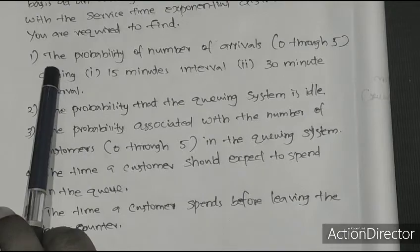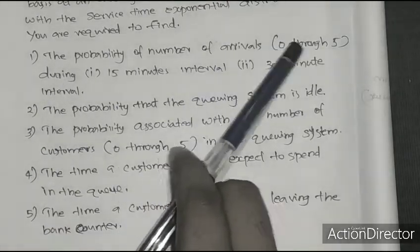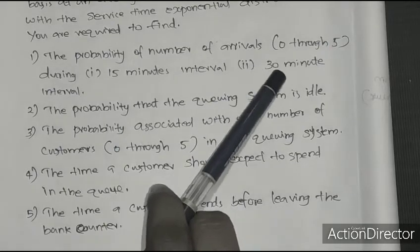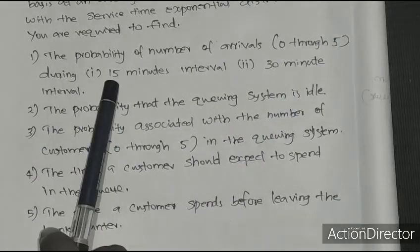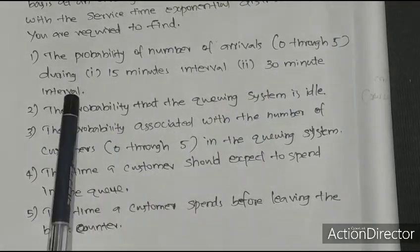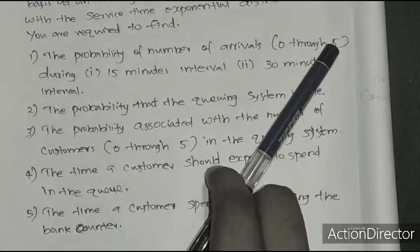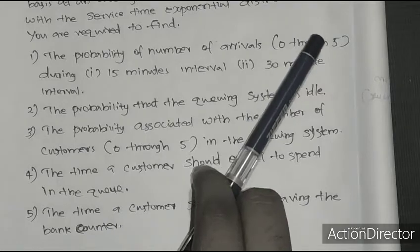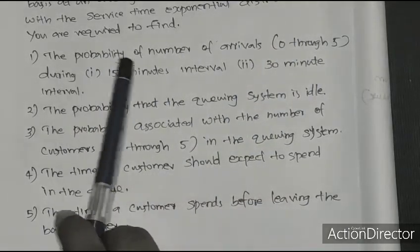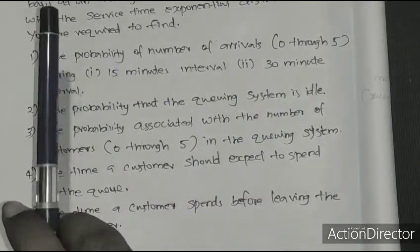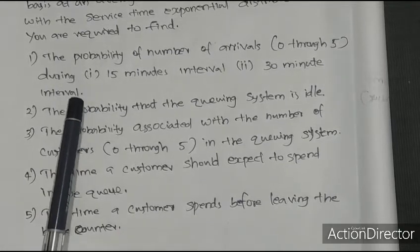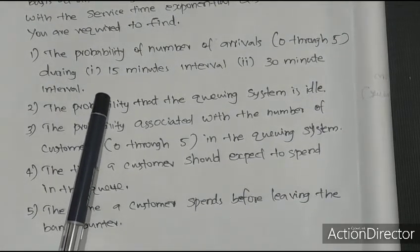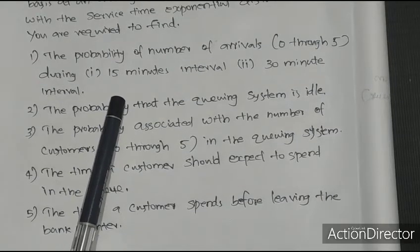We are required to find the following: First, the probability of number of arrivals from 0 through 5 during a 15-minute interval. Second, the same for a 30-minute interval. Third, the probability of n customers in the queuing system for n from 0 to 5. That is the probability of N customers arriving.